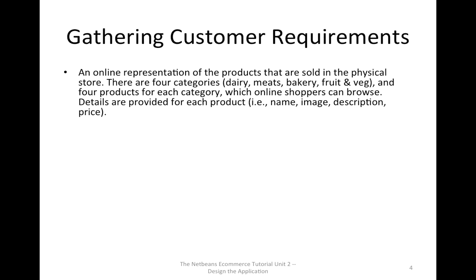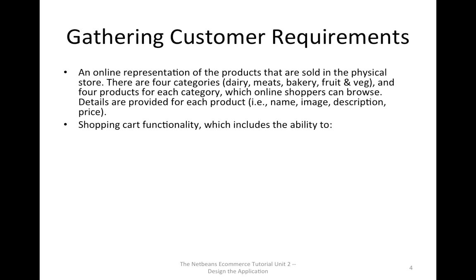There are four categories: dairy, meats, bakery, fruit and vegetable, and four products for each category, which online shoppers can browse. Details are provided for each product, for example the product name, product image, product description, and the price. Shopping cart functionality must also be implemented.